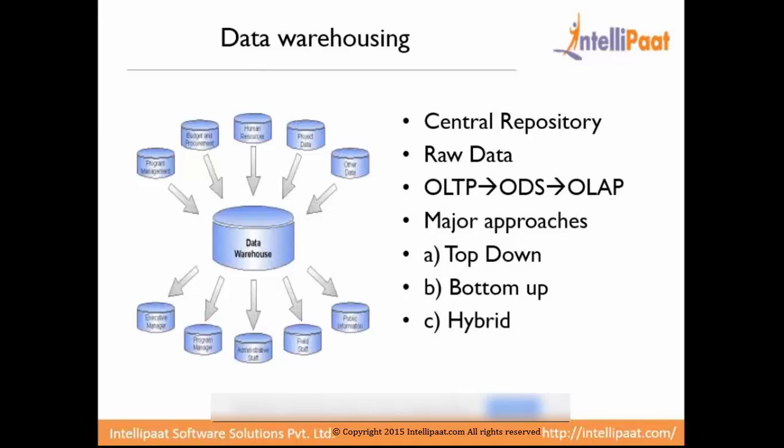All enterprises these days are very much interested to convert their historical data into some decision support system. There are three kinds of approaches for data warehousing. One is the top-down approach, where we gather all the data into one data warehouse and then divide it into different modules. Another is bottom-up, where we take all the data module-wise and then convert it into one big data warehouse. The third is hybrid, which is a mixture of both, used by enterprises as per their need.